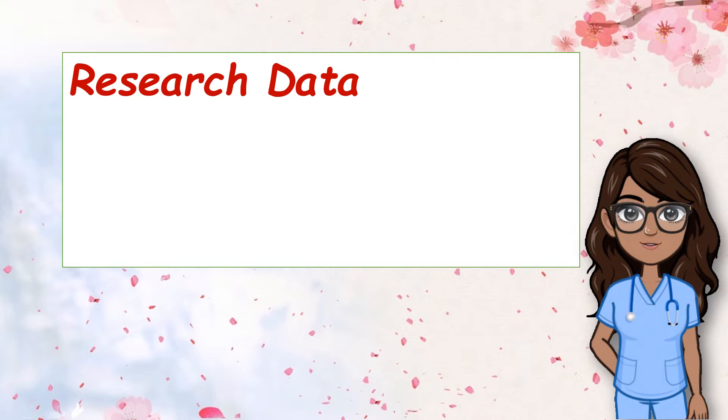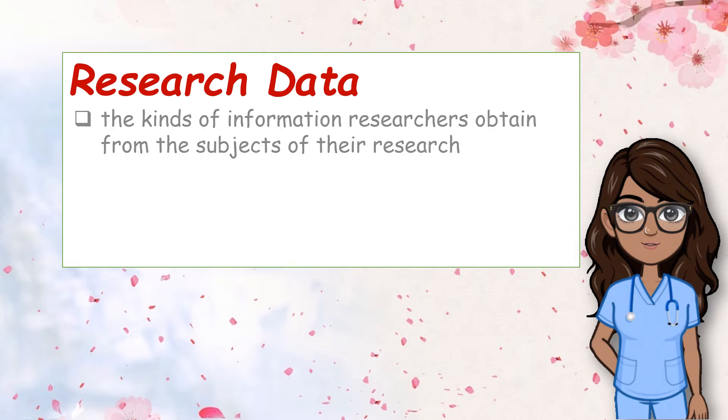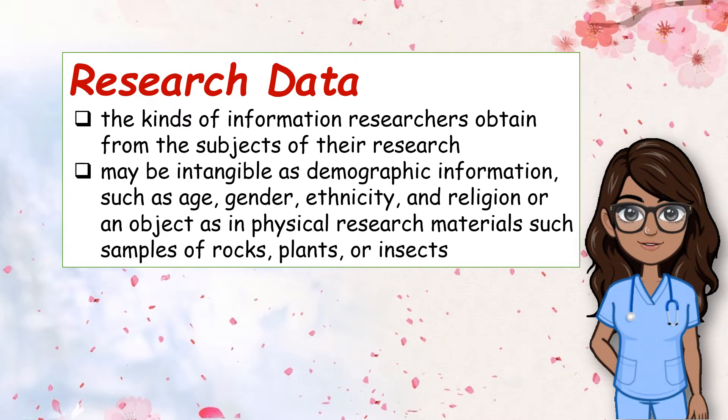What is research data? Research data refers to the kinds of information researchers obtain from the subjects or respondents of the research. Research data takes many different forms. It may be intangible as demographic information such as age, gender, ethnicity, and religion, or an object as in physical research materials such as samples of rocks, plants, or insects.